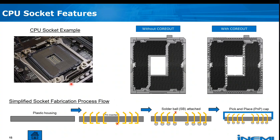The simplified socket fabrication process is: first, injection molding to create the bare plastic housing; second, pin insertion or stitch process where contact pins are inserted into each hole (this socket has 2011 pins); third, solder ball attachment using various techniques; and finally, placing a pick-and-place cap onto the pins to protect them and aid alignment onto the motherboard during SMT reflow.